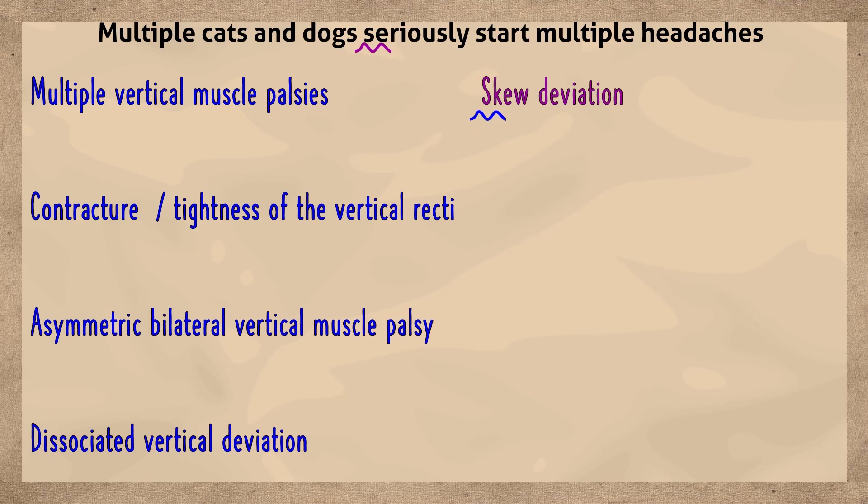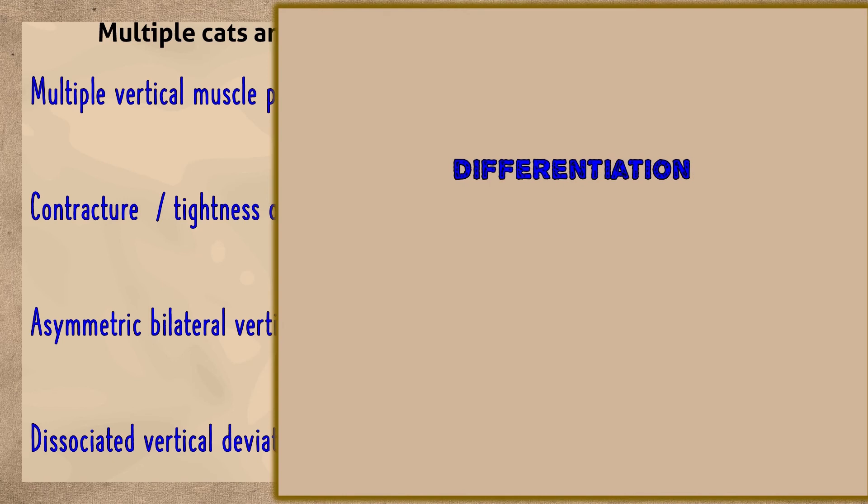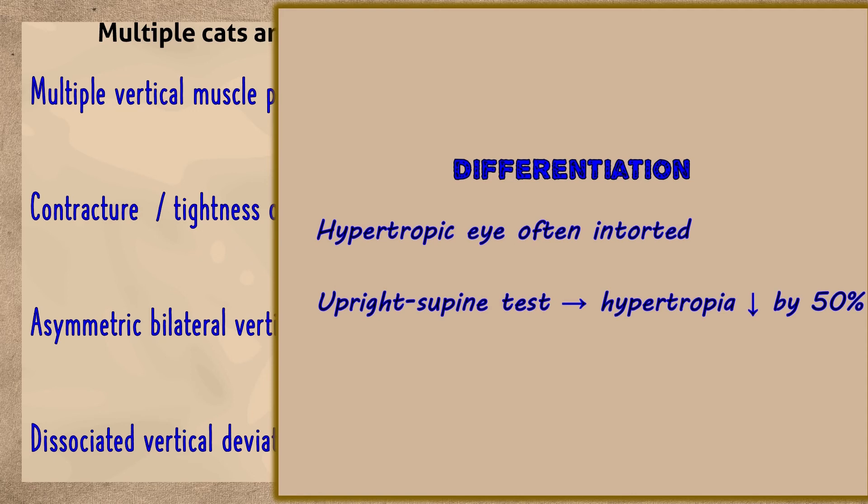A skew deviation may mimic a fourth nerve palsy on the 3-step test. However, in a skew deviation, the hypertropic eye will often be intorted and performing a prism and alternate cover test shows a 50% reduction in hypertropia in the supine position.